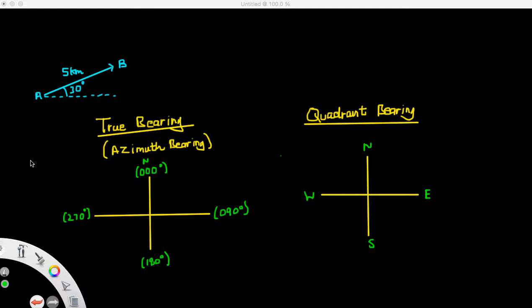The first way to do so is by using the true bearing, also known as the azimuth bearing. The true bearing is a compass measurement where the angle is measured from north in a clockwise direction. North is given the bearing of 000 degrees. It's usually given in three digits with the leading zeros.